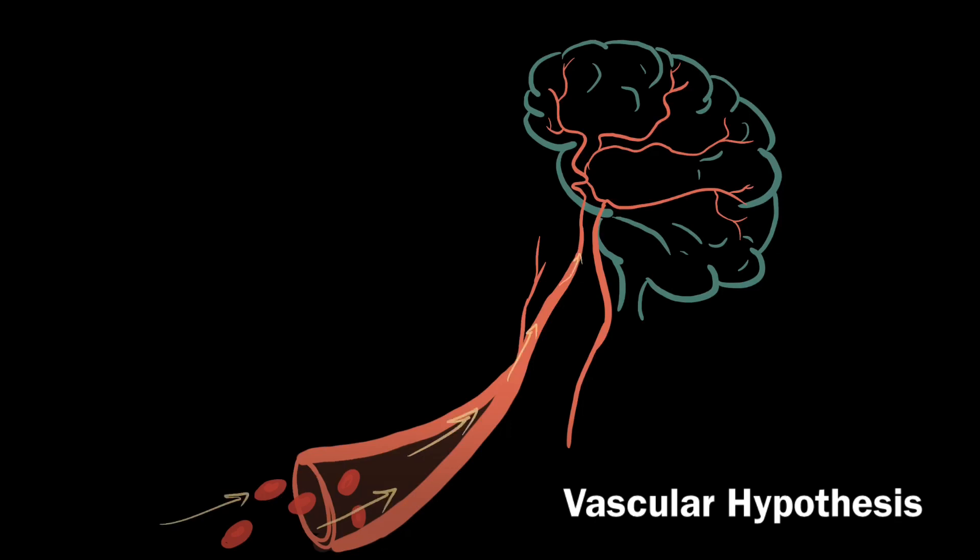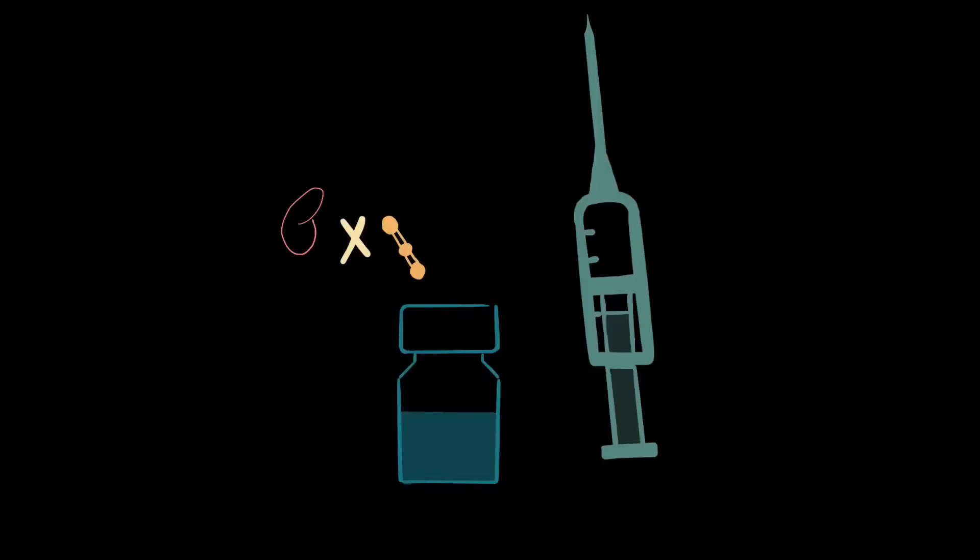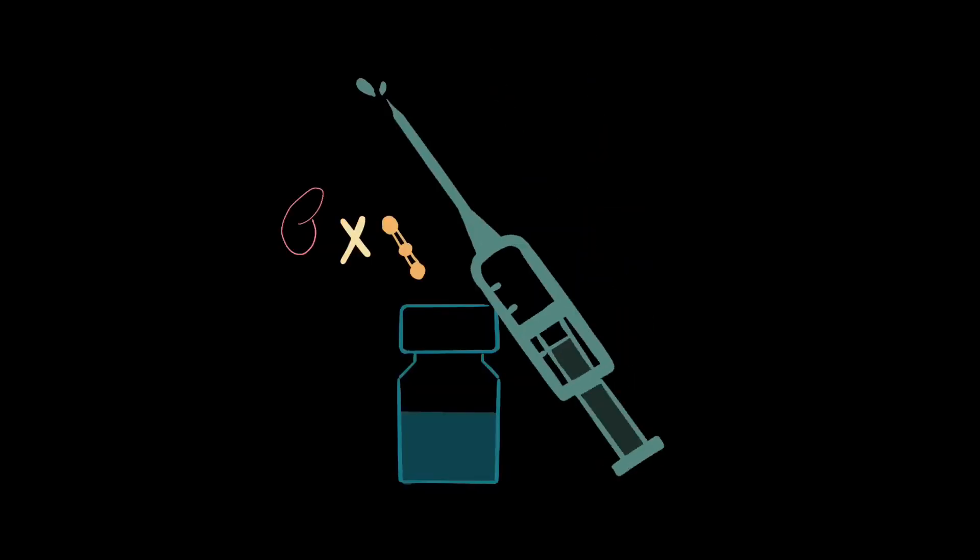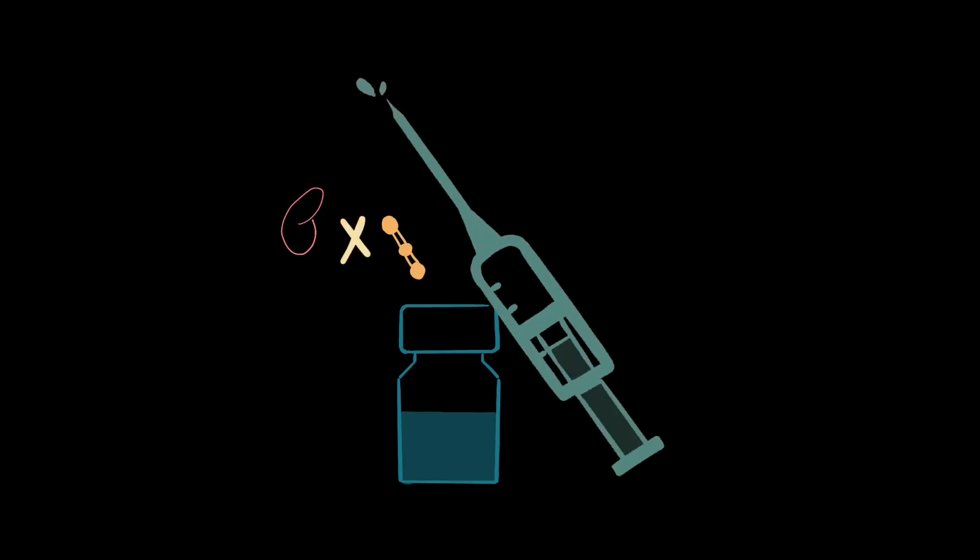Amyloid beta, in turn, makes fibrin stickier, so it binds to passing red blood cells, forming large sticky clots which reduce blood flow to the brain. Biochemists are now developing drugs to prevent amyloid beta binding to fibrin to stop Alzheimer's disease.